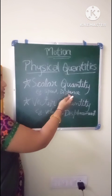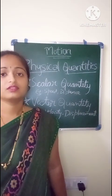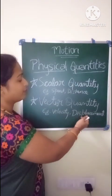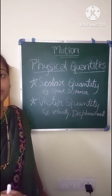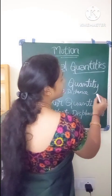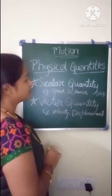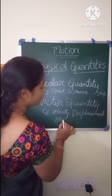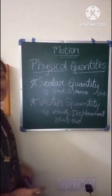For example, speed and distance are scalar quantities. Vector quantities are physical quantities which have both magnitude as well as direction — for example, velocity and displacement. Magnitude means having only a number but not a direction. For example, vehicle speed can be 8 km per second. But in case of velocity, it will be 8 km per second in the direction of east, west, north, or south.